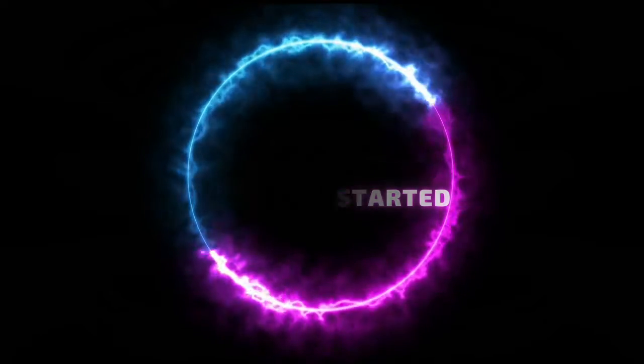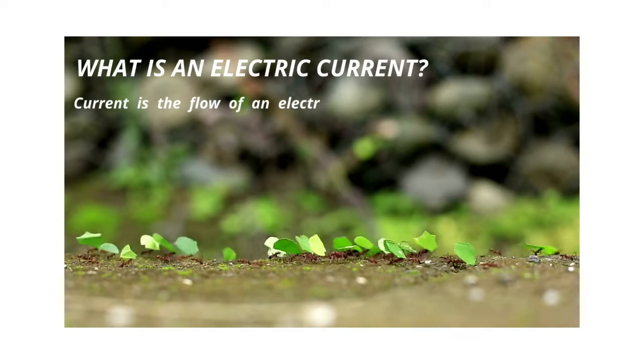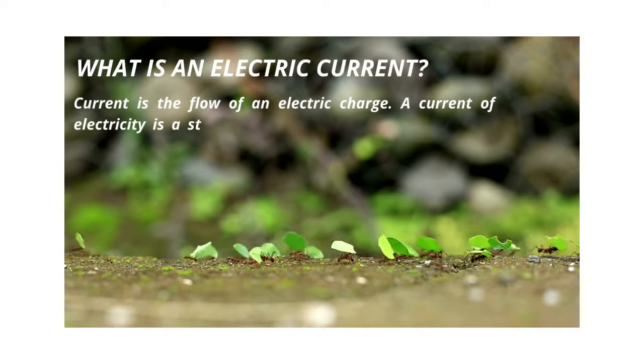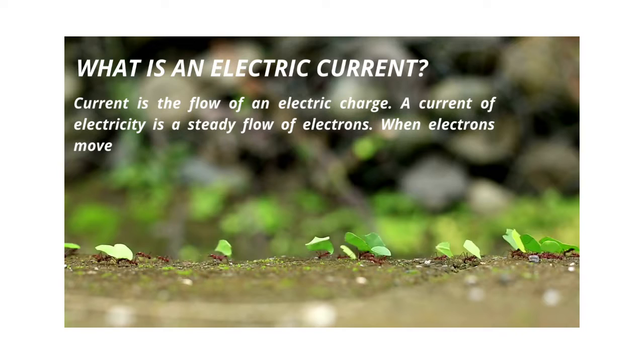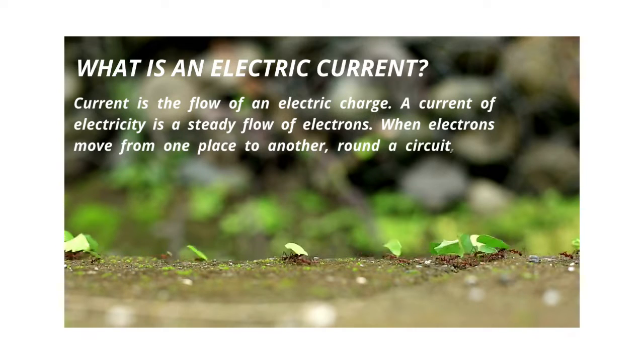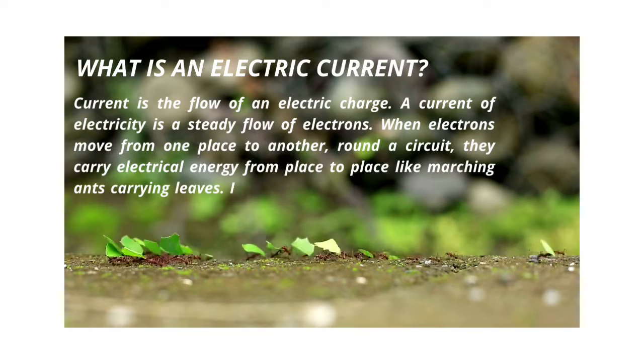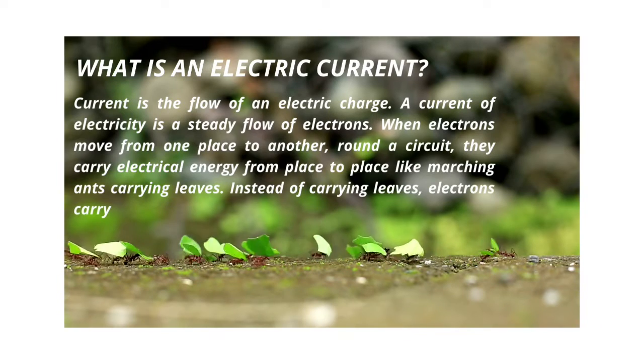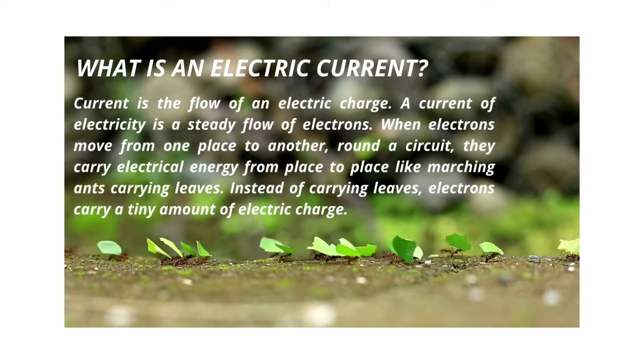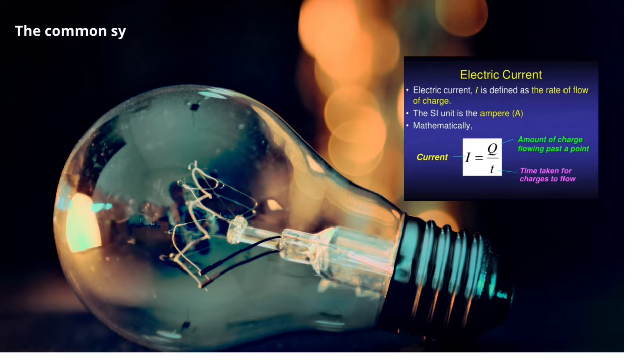What is an electric current? Current is a flow of an electric charge. A current of electricity is a steady flow of electrons. When electrons move from one place to another around the circuit, they carry electrical energy from place to place like marching ants carrying leaves. Instead of carrying leaves, electrons carry a tiny amount of electric charge.